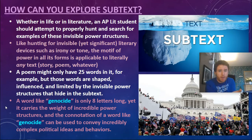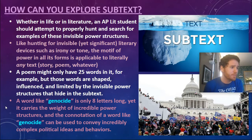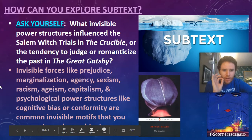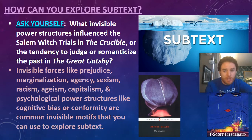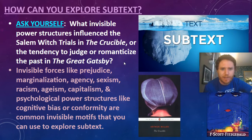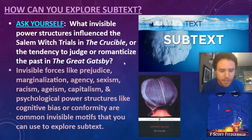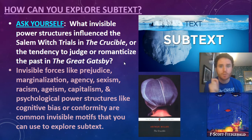One word is propped up and supported by incredible power structures. Consider other words like freedom, ballet, or education — what invisible power structures support those? Ask yourself: what invisible power structures influenced the Salem witch trials in The Crucible, or the tendency to judge or romanticize the past in The Great Gatsby? Invisible forces like prejudice, marginalization, agency, sexism, racism, ageism, capitalism, and psychological power structures like cognitive bias or conformity are common invisible motifs you can use to explore subtext.